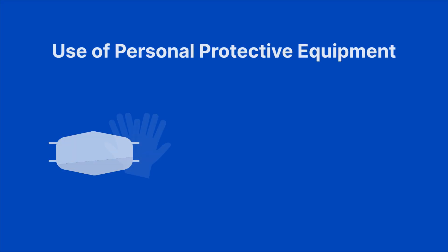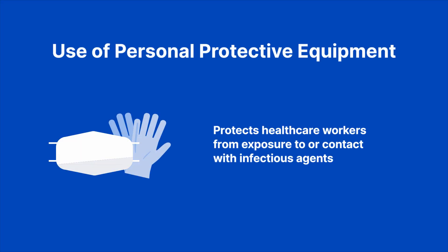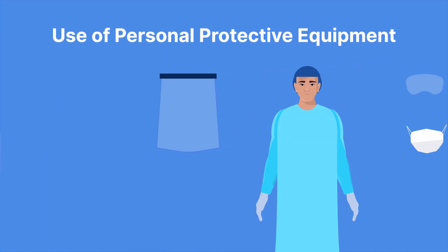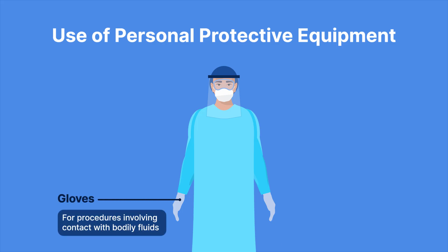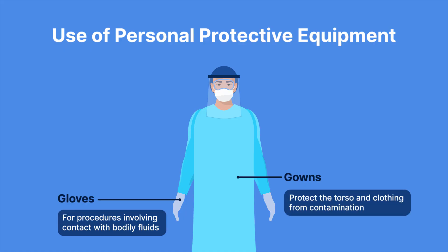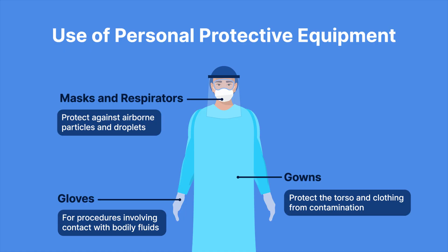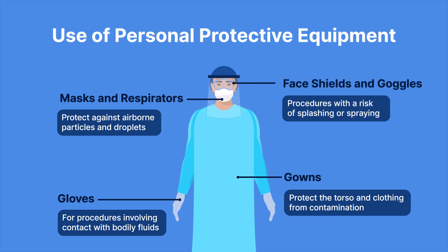The use of personal protective equipment, or PPE, protects healthcare workers from exposure to or contact with infectious agents. Depending on the level of exposure, various forms of PPE such as gloves, gowns, and masks are used. There are many types of PPE used in a healthcare setting, including gloves for procedures involving contact with bodily fluids, gowns to protect the torso and clothing from contamination, masks and respirators to protect against airborne particles and droplets, and face shields and goggles for procedures with a risk of splashing or spraying, such as aspirating an abscess.